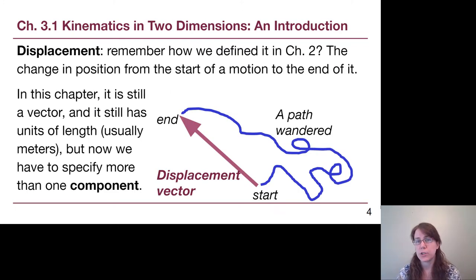Now if we think back to chapter two, chapter two was kinematics in one dimension. Chapter three is now kinematics in two dimensions. We're going to see how things get a little bit more complicated using the same underlying concepts once we're thinking in two dimensions. The idea of displacement back in chapter two was a change in position. We care about where we were at the end compared to where we were at the beginning of a motion.